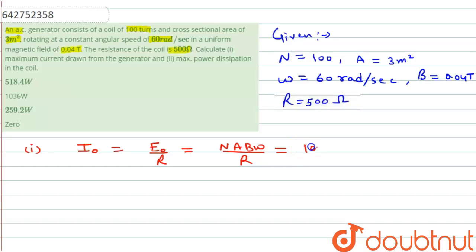Here N is 100, A is 3 meter square, B is 0.04 tesla, and omega is 60 radian per second, divided by 500. So after simplification we will get 1.44 ampere. This is the value of I₀.